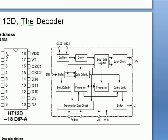So the 12D, the decoder IC is the same. We have got again 8 address pins and this is the ground, this is the negative and this is the supply and this is a valid transmission pin. And then we have also the same oscillator, 2 oscillator pins for fixing resistors here.